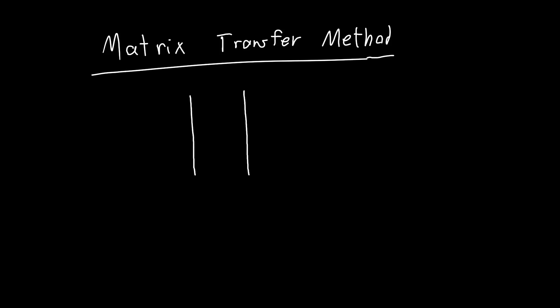Basically what this does is: let's say I've got a multi-layer structure with some refractive index here and some refractive index here. I apply some plane wave at the input — some electric field at this first layer — and I'm going to get some reflection here, some transmission, then some reflection again and some transmission.